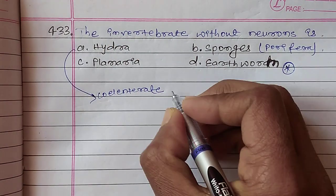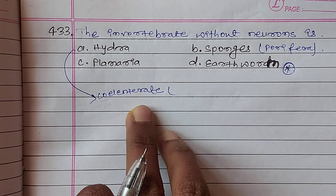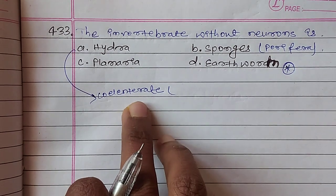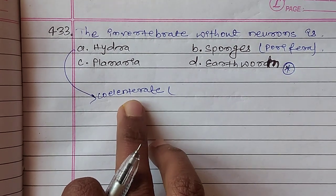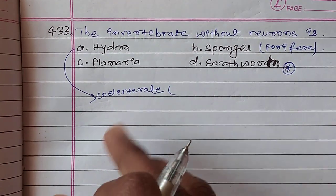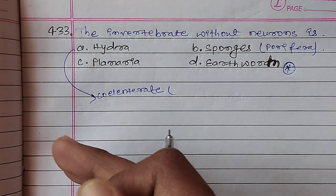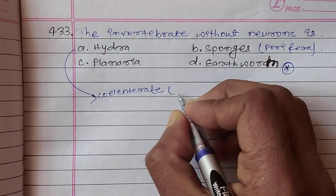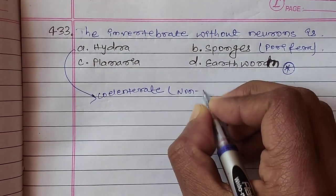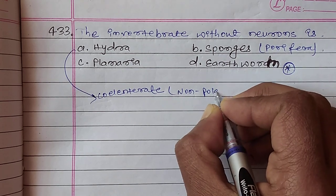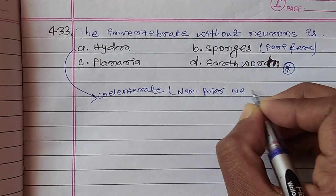Hydra, the Coelenterate, has a nervous system. This is a nervous system — the nervous system is a non-polar nerve-net system.